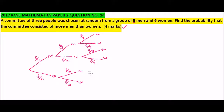In the next branch, we chose a woman first — they reduced to 5 — then a man, reducing men to 4. So the probability of choosing a man is 4/9. We have chosen one woman, so the remaining women are 5, and the total number of people is 9, giving probability 5/9 for a woman.